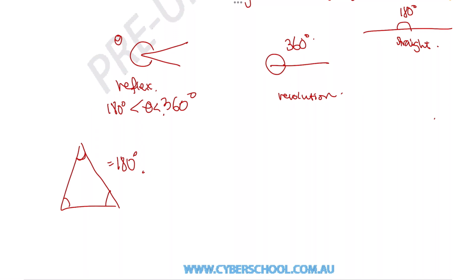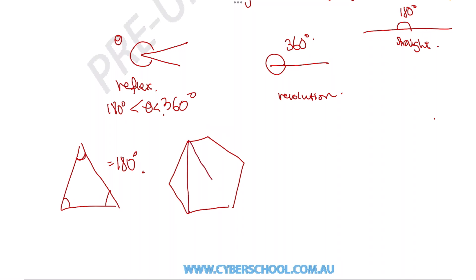For example, if you want to figure out the angle sum of a hexagon, you take the corners and divide them up into triangles. You can see there are 4 triangles, and the corners are composed of the three angles of each triangle. So the angle sum of a hexagon is the number of triangles — which is 4 — times the angle sum of each triangle, which is 180 degrees. That gives us 720 degrees.